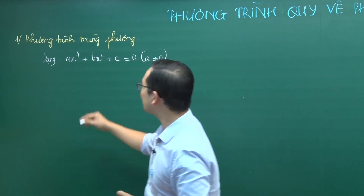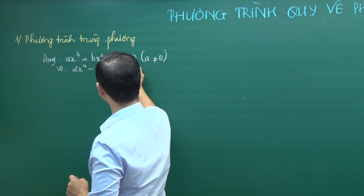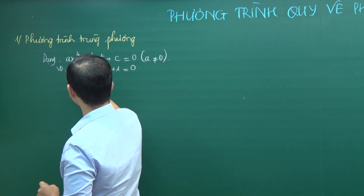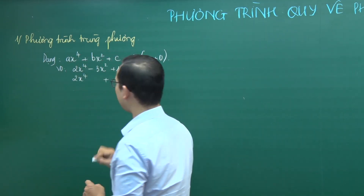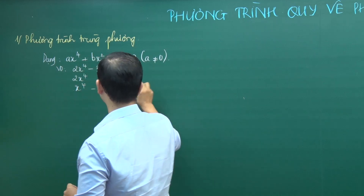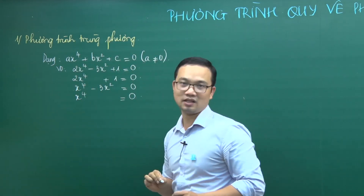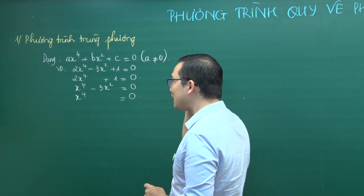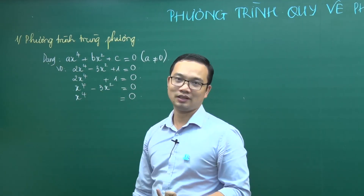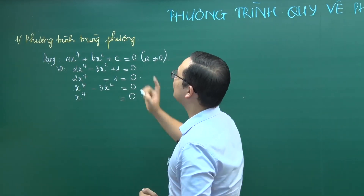Ví dụ các phương trình trùng phương: 2x⁴ - 3x² + 1 = 0; hoặc 2x⁴ + 1 = 0; hoặc x⁴ - 3x² = 0; thậm chí x⁴ = 0. Như vậy trong phương trình trùng phương phải có x⁴ là cao nhất, không có x³, không có x, và có thể có x² và hệ số tự do.